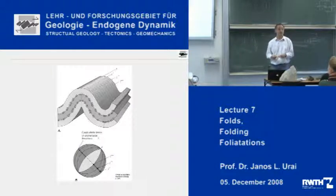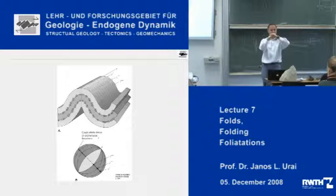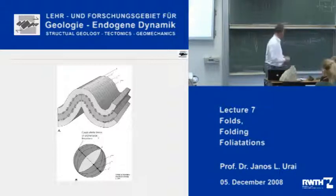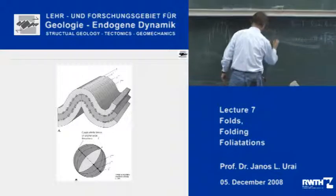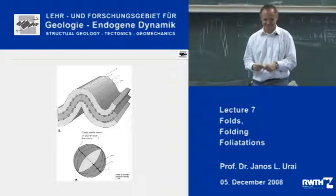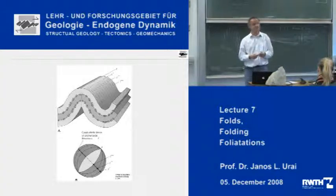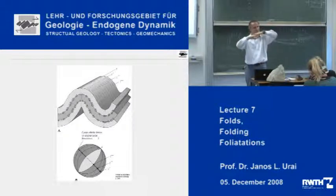One process which is very important — and I've explained it during the summer excursions — is flexural slip. If you have two layers and you fold them, it is much easier to accomplish the deformation if you allow slip between the layers; this is called flexural slip, or in German, Biegungsgleitfaltung. Whenever you go into the Ardennes and look at a folded layer, you very often find slickensides and lineations giving evidence that there has been slip between the layers during folding.